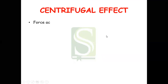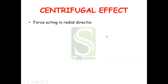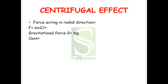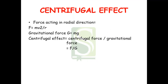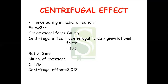The centrifugal effect is defined as follows. The force acting in the radial direction F equals MV²/R. The gravitational force is G, given in milligrams. The centrifugal effect equals centrifugal force divided by gravitational force. Since V equals 2πRn, where n is the number of rotations, the centrifugal effect C equals F/G, which simplifies to 2.013 × n² × D.